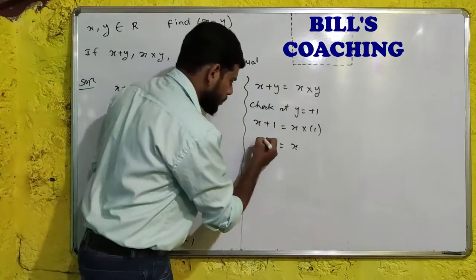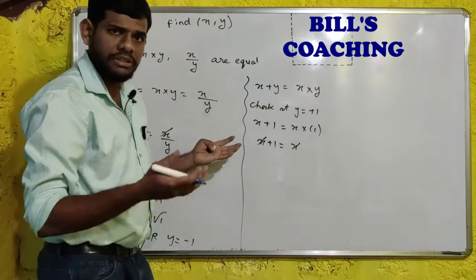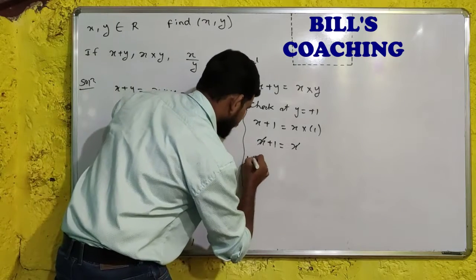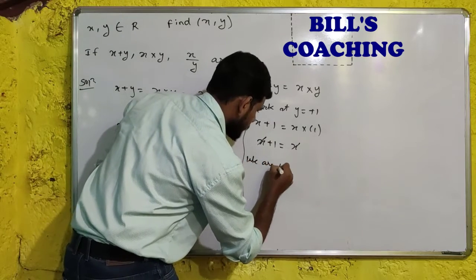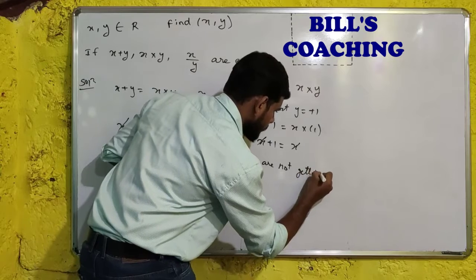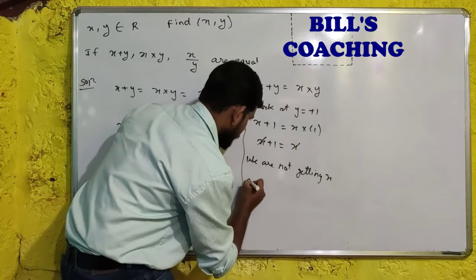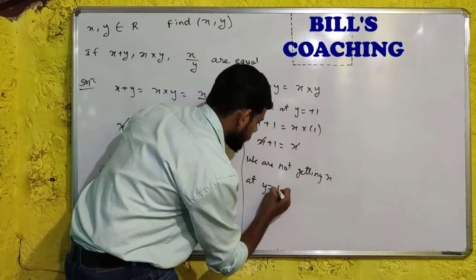But we are not getting value of x over here because x and x will get cancelled out. So we are not getting x at y is equal to plus 1.